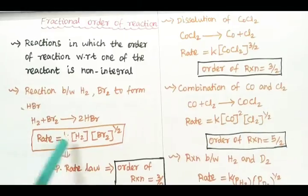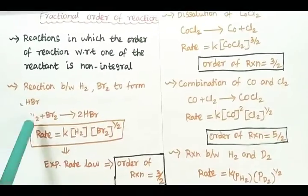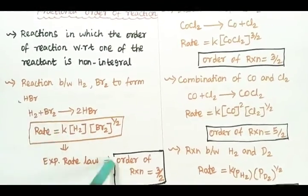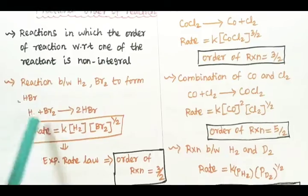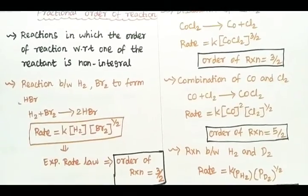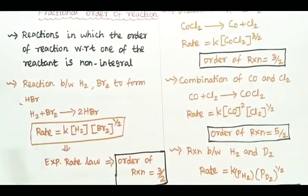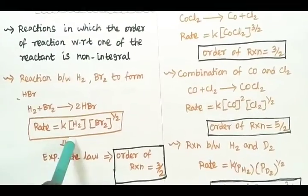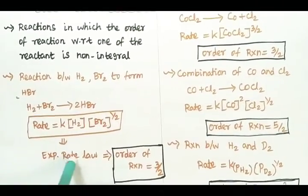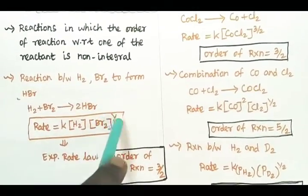Let's talk about what the reaction is and what the order of reaction is. Let's talk about the reaction between hydrogen and bromine. We have one mole of hydrogen and one mole of bromine stoichiometrically, and if we add the concentration term, we have two moles.